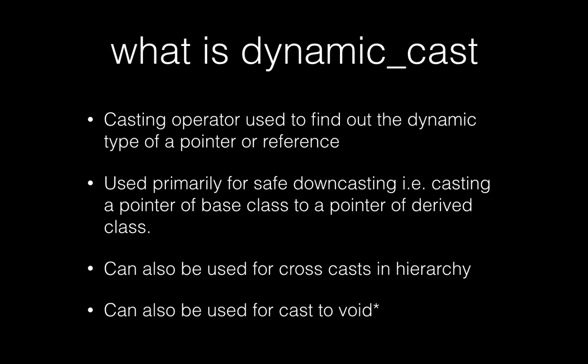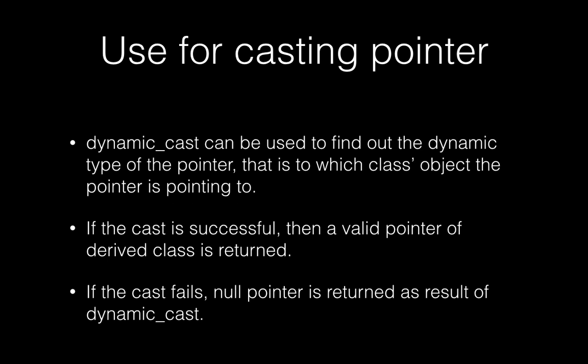Dynamic cast can also be used for cross cast in a hierarchy as well as for casting to void pointers. When you use dynamic cast for a pointer, you can find out the dynamic type of the pointer — that is, which class object the pointer is pointing to. If the cast is successful, you get a valid pointer of the derived class, and if the cast fails, you get a null pointer as a result.